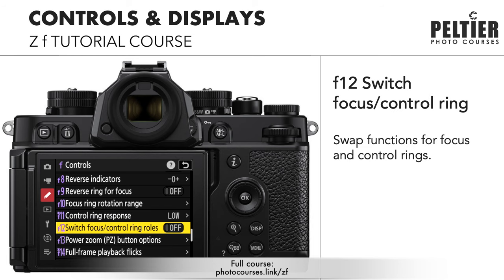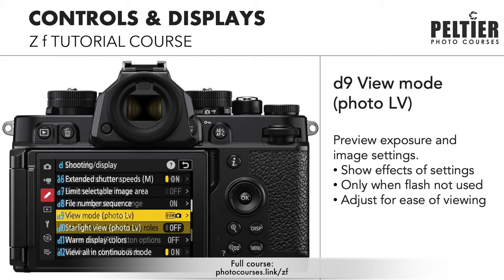F12, switch focus control ring roles — that's going to swap what is set for the focus ring and control ring. The lens zoom ring is always going to be used to zoom the lens. Those were our controls; let's look at some ways to customize our displays.